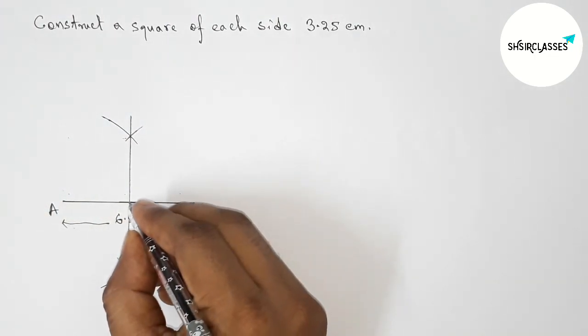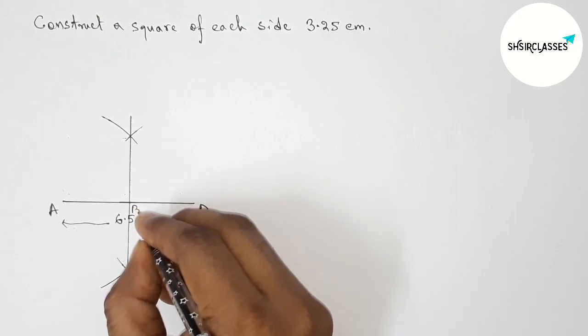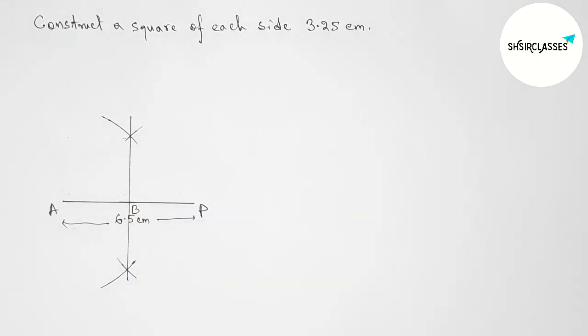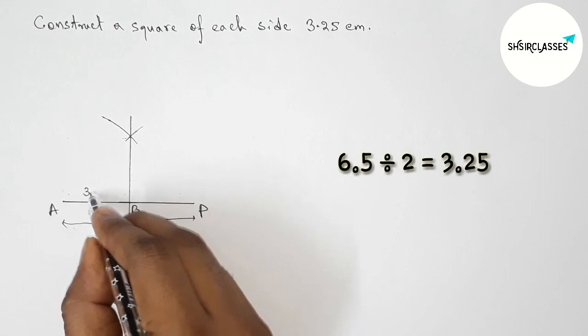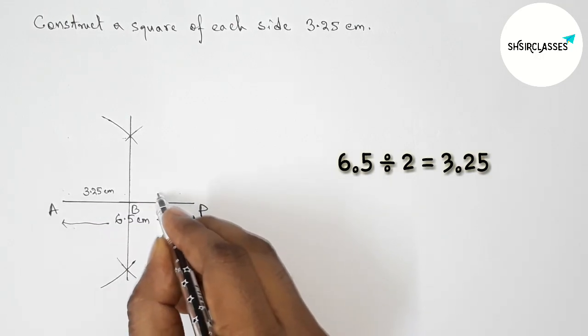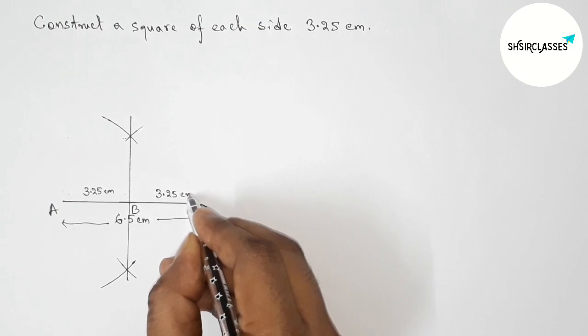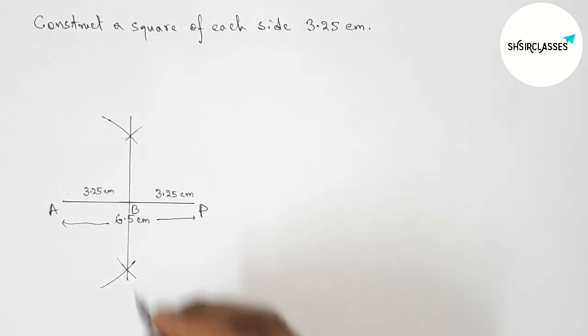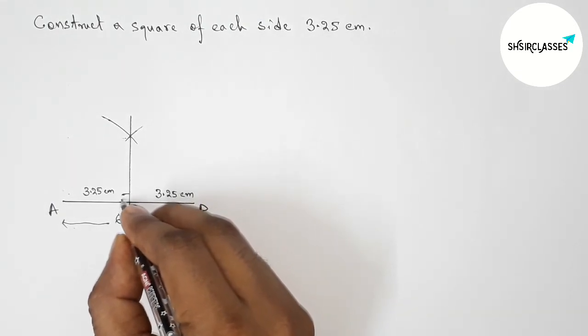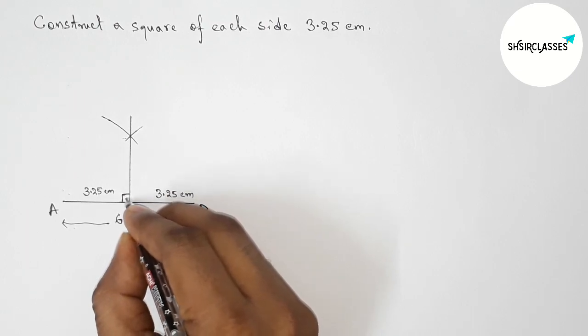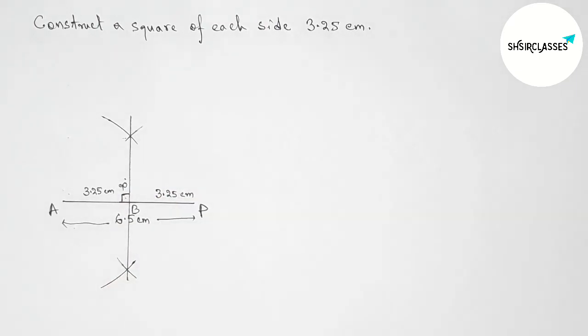Take point B. Now AB is 3.25 centimeters and BP is also 3.25 centimeters. And this is obviously a 90-degree angle.